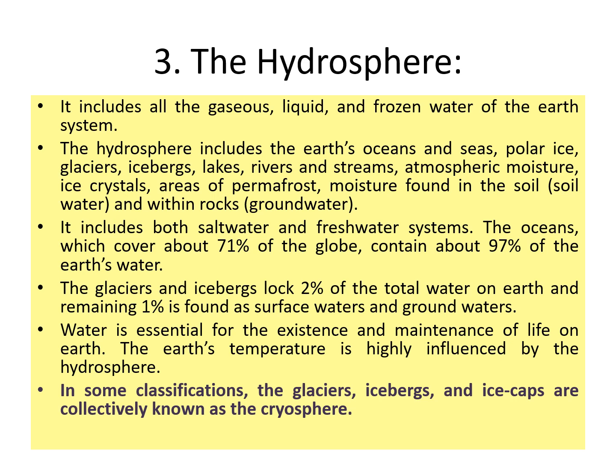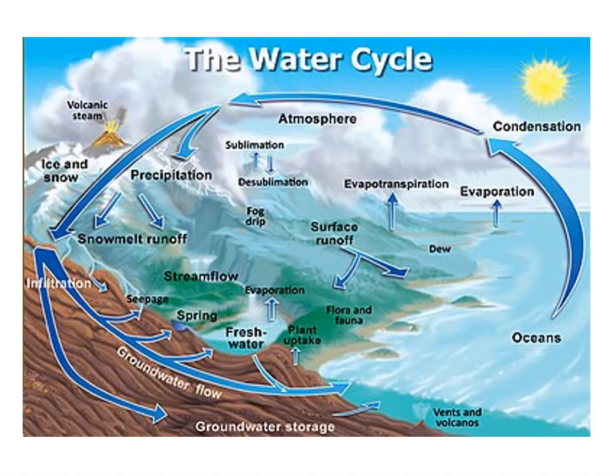Glaciers, icebergs, and ice caps are collectively known as the cryosphere — the sphere of ice and snow. The hydrosphere is often depicted through the water cycle, where there is a constant exchange of water through its various forms — solid, liquid, and gas — through various compartments of the Earth. Water gets evaporated, then condenses to form clouds, and then precipitates out as water, going into the ground as fresh water sources as well as into the ocean. Water is constantly being cycled; it is not produced, only recycled.